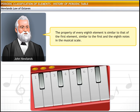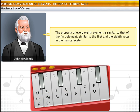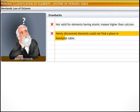Consider the list of elements with their atomic weights in increasing order. Starting with lithium, the eighth element from lithium is sodium. Similarly, the eighth element from sodium is potassium. Lithium, sodium and potassium show similar properties — for instance, all three elements are shiny and fairly soft. However, Newlands' Law of Octaves failed because it was not valid for elements of atomic masses higher than calcium, and newly discovered elements could not find a place in Newlands' table.